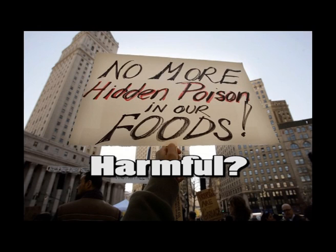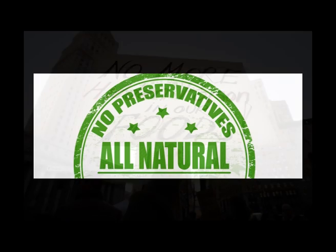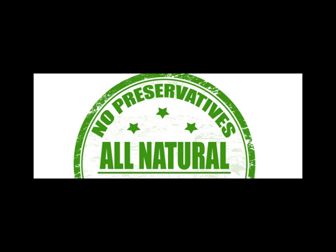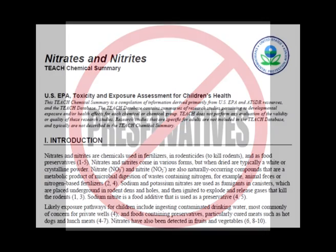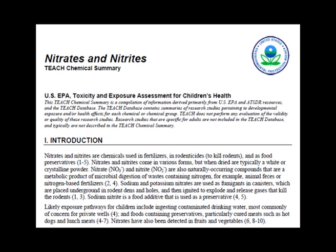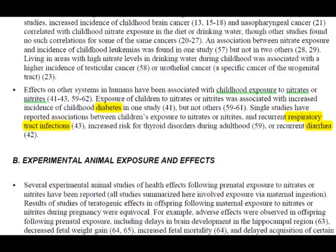But if these chemicals are able to kill bacteria, won't they affect us too? The widespread use of preservatives has indeed raised some health issues. Researchers showed that there are many negative effects of the use of preservatives. Nitrates and nitrites, which you'll find in bacon, ham, and sausages, may increase risk of diabetes, diarrhoea, and respiratory tract infections in children.